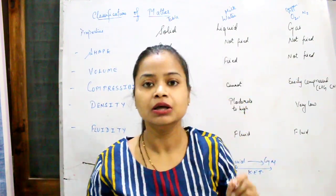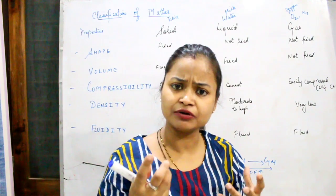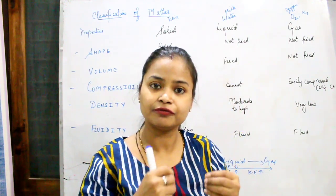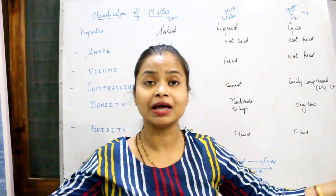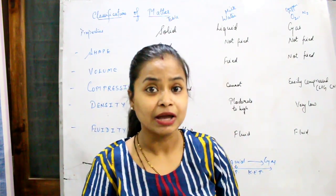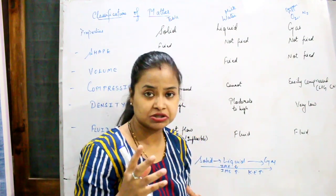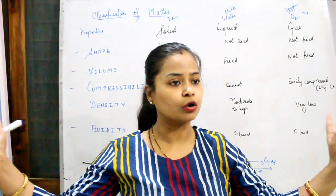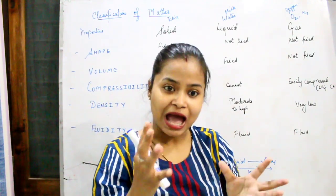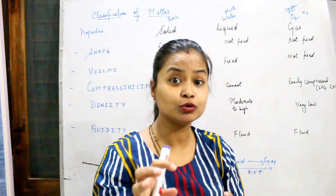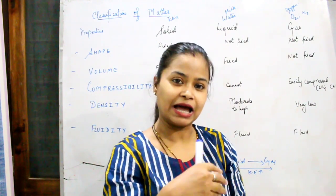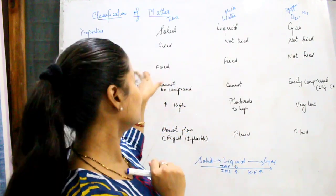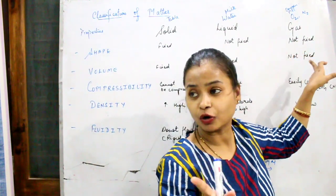If a balloon is filled with some amount of gas, that same gas, if released into a room, will occupy the entire room. There is no fixed space between the particles of a gas, so the gas particles will occupy the entire room as well as fit into the balloon when filled. Therefore, the volume of a gas is not fixed.